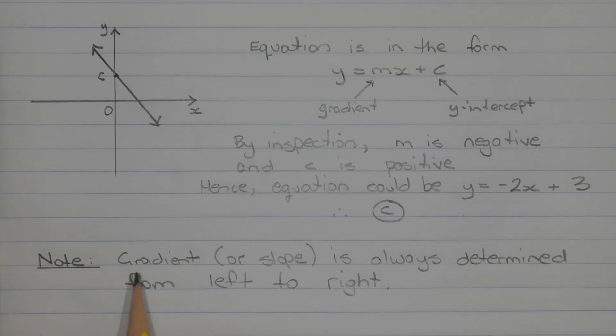Now as a side note, the gradient or slope of a line is always determined from left to right. So looking at our line from left to right we can see that it's going downhill, that means the value of m must be negative.